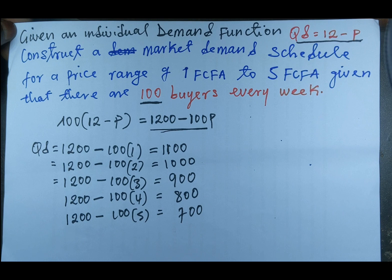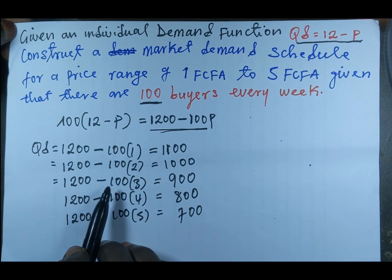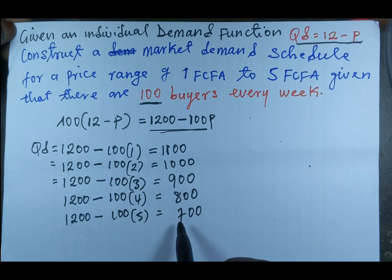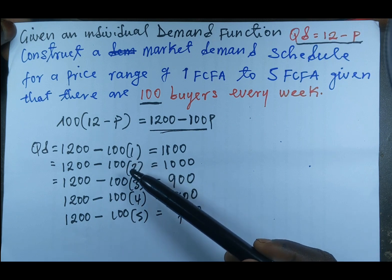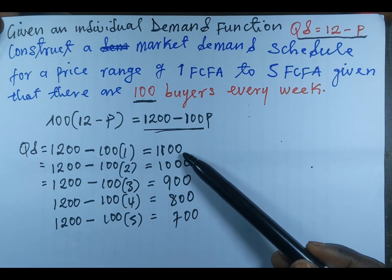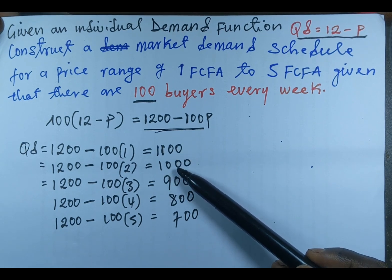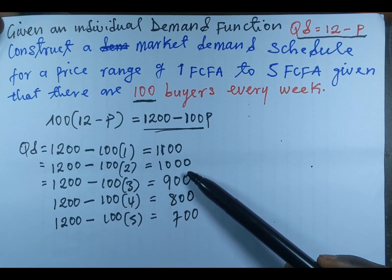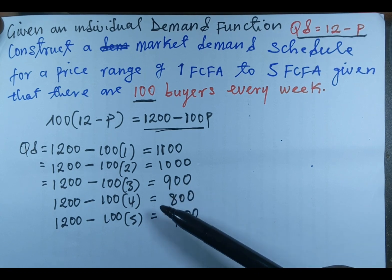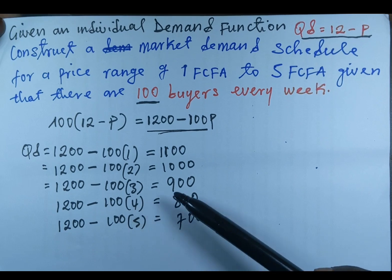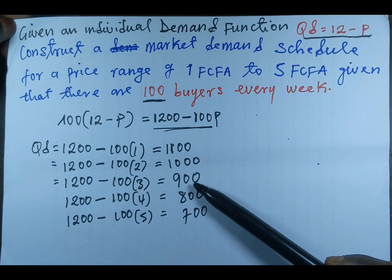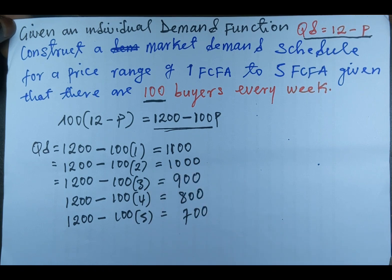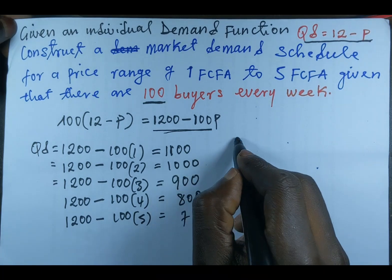Now we can observe that this follows the law of demand, which states that when price increases, quantity demanded falls. As price increases from 1 FCFA to 2 FCFA, quantity demanded falls from 1100 to 1000. From 2 to 3 FCFA it falls to 900, and from 3 to 4 FCFA it falls from 900 to 800 units. As price increases, quantity demanded is falling.